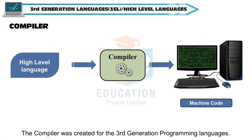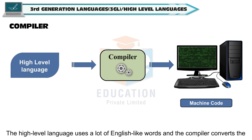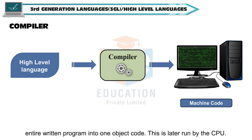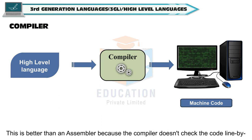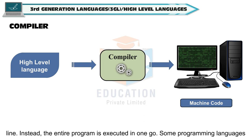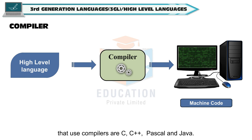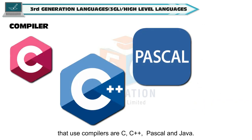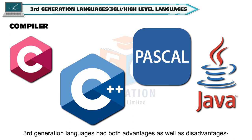The compiler was created for third generation programming languages. The high-level language uses a lot of English-like words and the compiler converts the entire written program into one object code. This is later run by the CPU. This is better than an assembler because the compiler doesn't check the code line by line — instead, the entire program is executed in one go. Some programming languages that use compilers are C, C++, Pascal and Java.